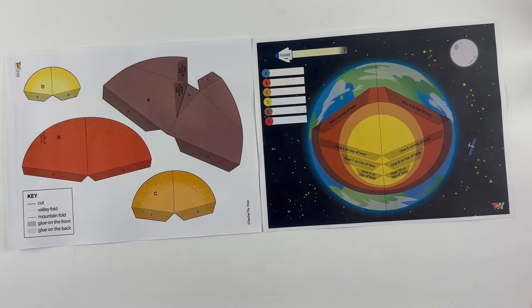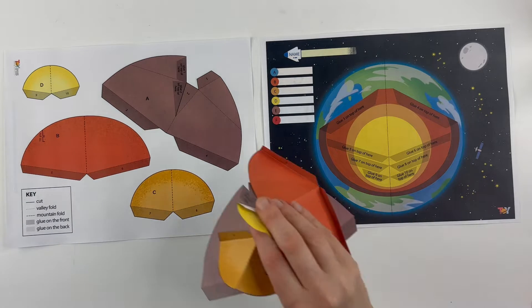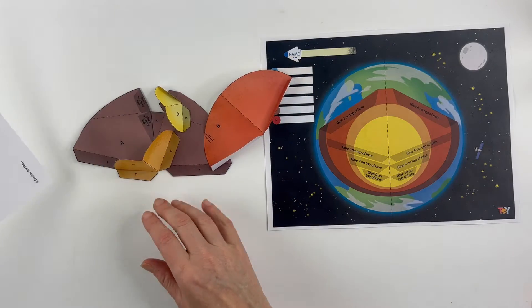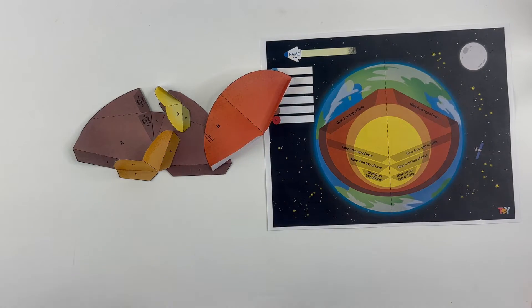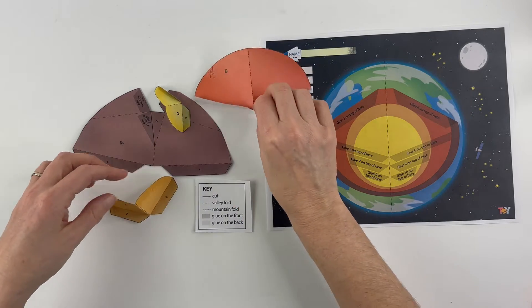So the first thing you need to do is to cut out the pieces which I have already done here. So I'm going to take this sheet away. And then you just need to follow the folding rules.